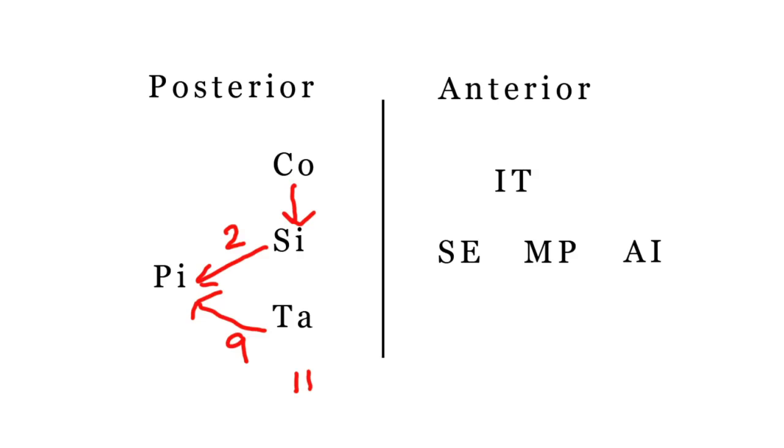As you will see, the other side on the anterior will also have 11 branches. So now, going back to the anterior side, you know that IT's EMP AI is what you need to work with. IT stands for the internal thoracic artery, and SE of IT's EMP stands for the superior epigastric, and MP stands for the musculophrenic.